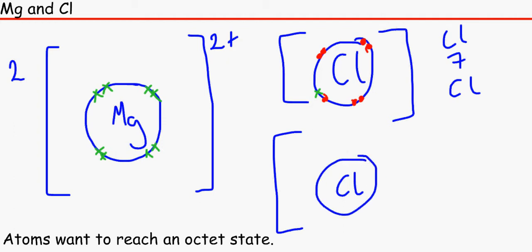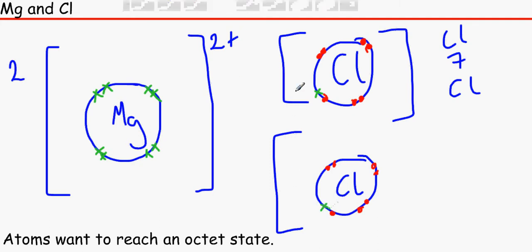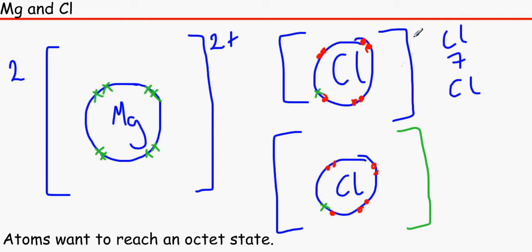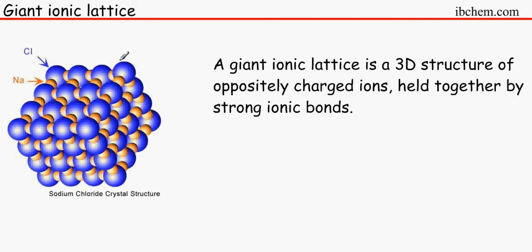You can see these are the 2 electrons that magnesium has lost. Atoms want to reach an octet state — 8 electrons on the outer shell; that's their dream. Now, a giant ionic lattice: what happens is that these ions join together.